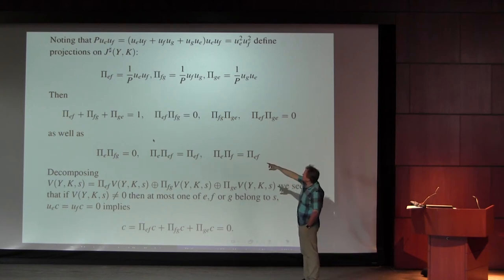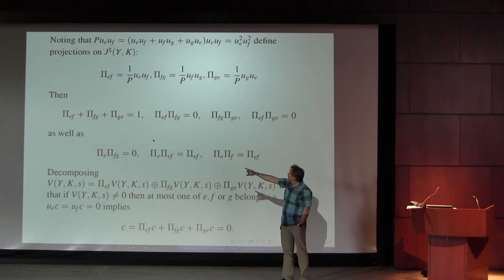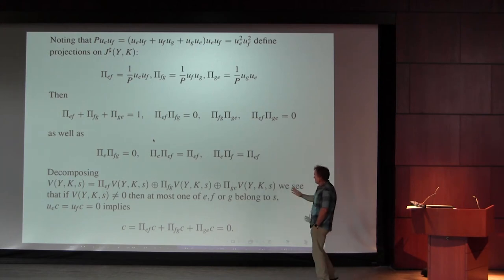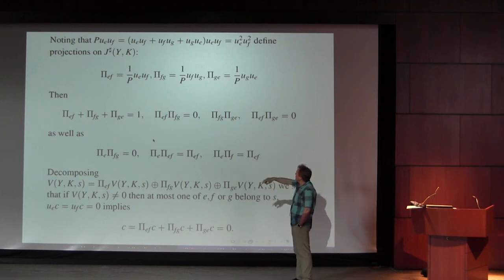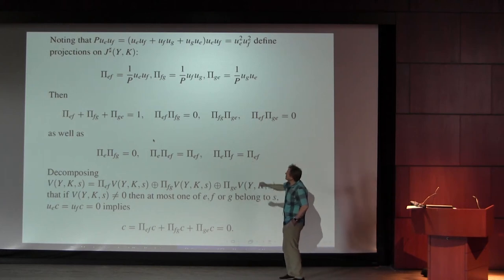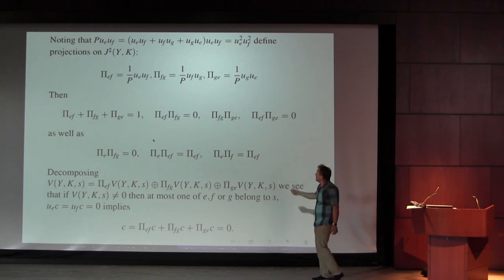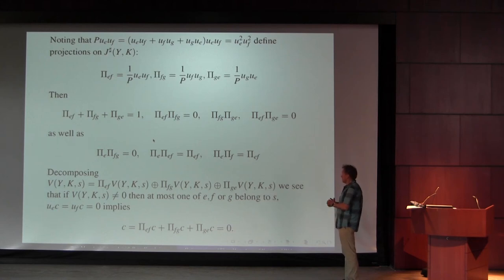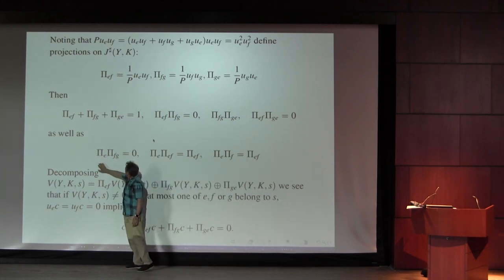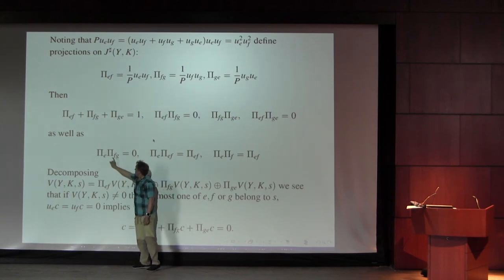So you have these three projections which, once I divide by p, add up to one — just divide that degree-two monomial relation by p. But the composition of any two distinct projections is zero, because that composition involves a product of all three things. You can also check that the projection for an edge and the projection for a pair of edges involving all three guys is zero.